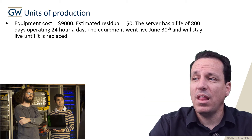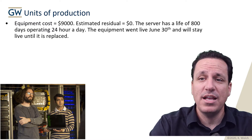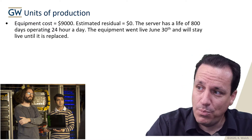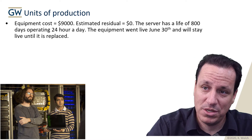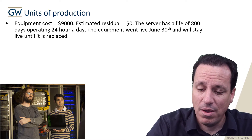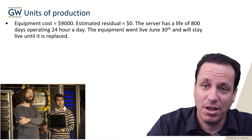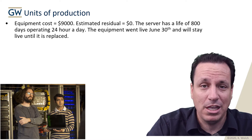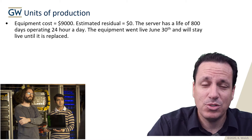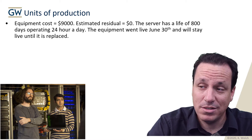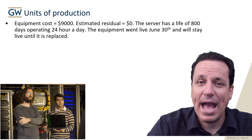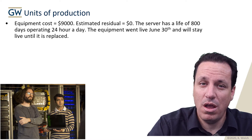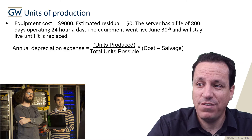The equipment went live June 30th and will stay live until it's replaced. I put it halfway through the year on purpose. In life, we don't just buy equipment at the end of the year. In this case, we have the middle of the year that it comes online — which tells you that half of the year it's on, so it's only on for half of 365 days.